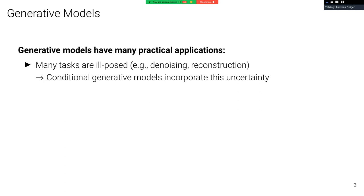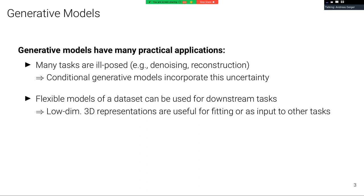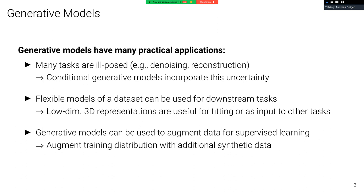Generative models also have many practical applications. Many tasks are ill-posed, for example denoising and reconstruction tasks, and conditional generative models can incorporate this uncertainty. Furthermore, having a flexible model of a dataset can be useful for downstream tasks. For example, having access to a low-dimensional 3D representation can be useful for fitting a 3D model to an image or as input to other tasks. And generative models can also be used to augment data for supervised learning, for example augment the training distribution with additional synthetic data.